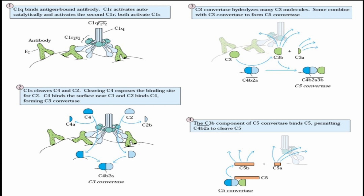C1S cleaves C4 and C2. C4B and C2A join together to form C4B2A, which is the C3 Convertase. The C3 Convertase cleaves the C3 component, producing the large fragment C3B. C3B joins C4B2A to form C4B2A3B, which is the C5 Convertase. The C5 Convertase binds C3B to act on C5.